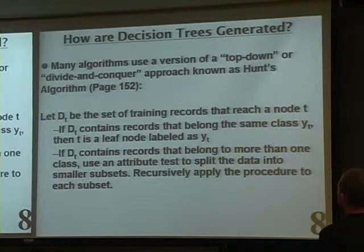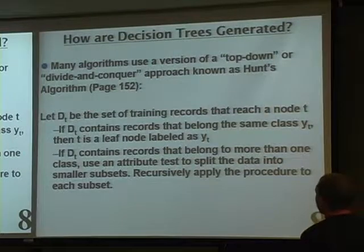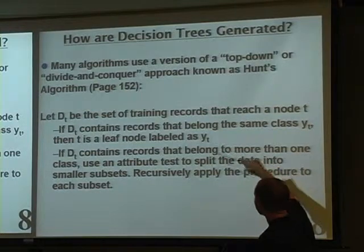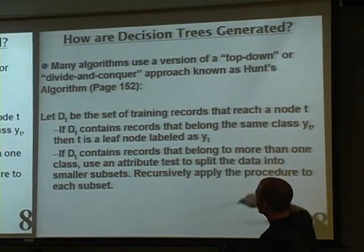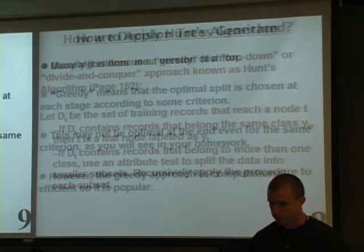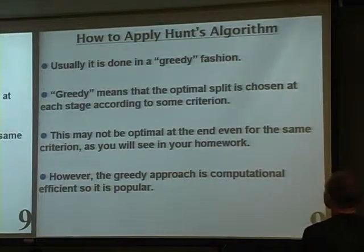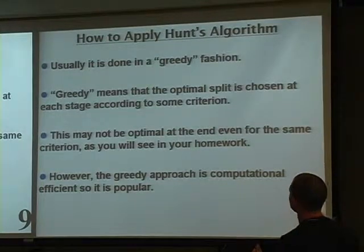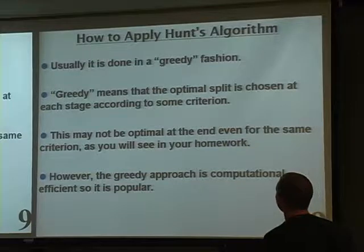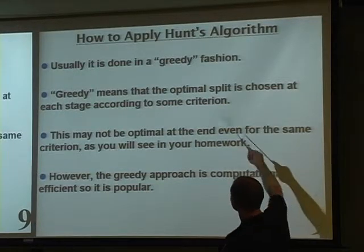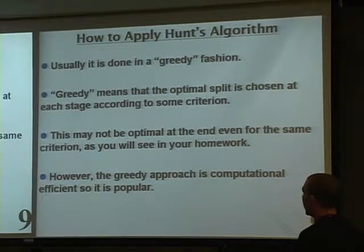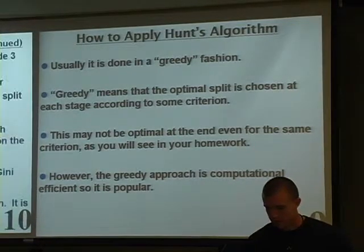Most algorithms that grow decision trees use a top-down approach: start at the root and if all observations belong to the same class, that's a terminal node and you stop. If they belong to different classes, you continue to split. The splitting is done in a greedy fashion — choosing the optimal split at each stage according to some criterion — which may not be globally optimal, but is computationally efficient.